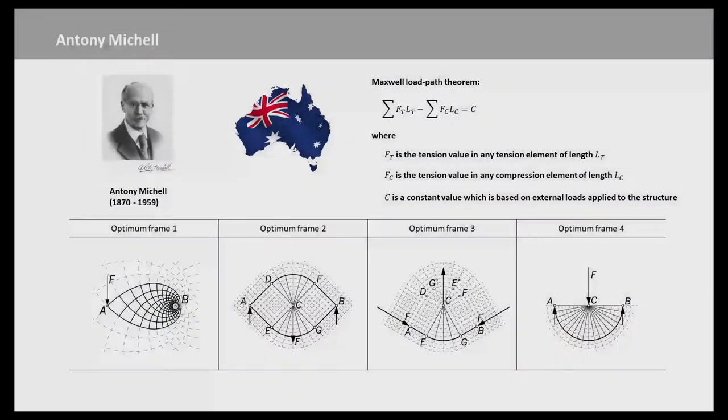This slide shows some of the truss geometries of minimal load-pass structures included in Michell's 1904 paper. Because Michell approached the problem from the point of view of continuum mechanics, it should be noted that the solutions permit an infinite number of elements, similar to the spokes of the bicycle wheel-like subsystems in some of the Michell trusses.